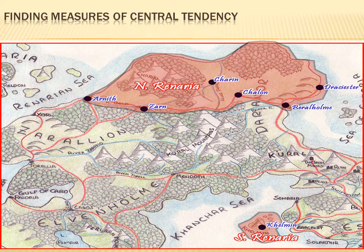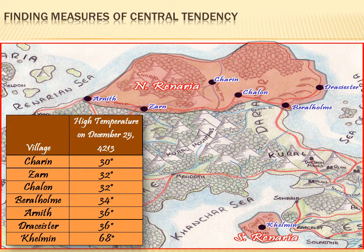Reneria is a fantasy land divided up into two portions. There's North Reneria, which is the pink area on top, and then there's South Reneria, which is the island in the sea below the mainland. You're probably going to visit both places, but most of Reneria is up in North Reneria. You want to know what the average temperature is, so you get some statistics — the high temperature on December 25th in the year 4213, for all the major cities in Reneria.